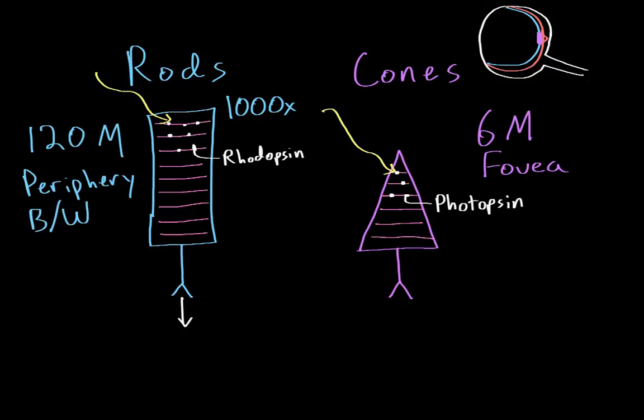On the other hand, cones are not as sensitive, but they do result in the detection of color. So they result in color vision. And in fact, there are three different types of cones. There are red cones, which make up about 60% of all cones in the eye. There are green cones, which make up about 30% of all cones in the eye. And there are blue cones, which make up about 10% of all cones in the eye.